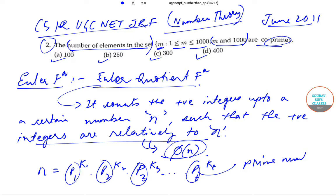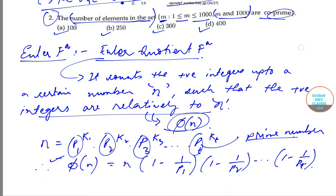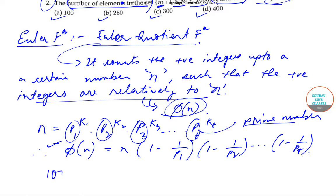These are all prime numbers. So in that case, phi(n), which means the number of positive integers which are relatively prime to n, will be given by n × (1 - 1/p1) × (1 - 1/p2) and this will go on till (1 - 1/pt). This is the formula that we will be using.